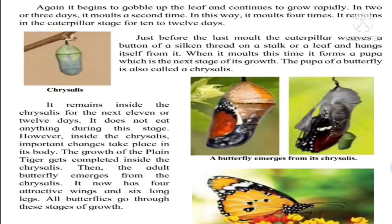The caterpillar has gone into the third stage called the pupa stage, also called chrysalis. The pupa of a butterfly is called a chrysalis. In this stage it remains for 11 to 12 days, and here it is the opposite of the larva stage — in the larva stage it was eating continuously, but here it does not eat anything. It grows inside the chrysalis and important changes take place in its body. The growth is completed in this stage.